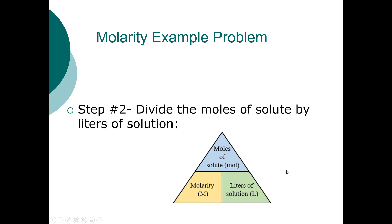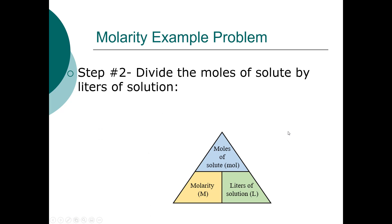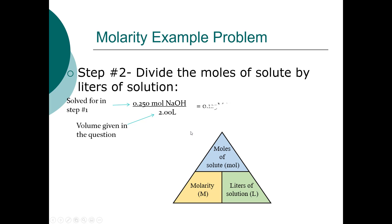Step two: divide moles by liters. You have 0.25 moles from step one and 2 liters given in the problem. Dividing gives 0.125 M — a 0.125 molar NaOH solution. For practice this week, if you're not in person you'll do a worksheet; if you're in person you'll actually make different molarities of Kool-Aid and taste them to find your favorite molarity.